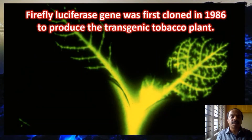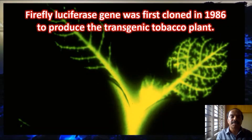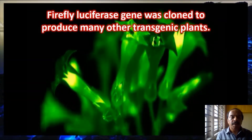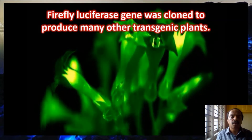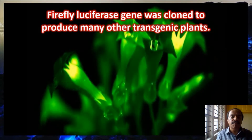Bioluminescence has been utilized by biotechnologists. The gene coding for the bioluminescence enzyme luciferase was first cloned into a tobacco plant in 1986. What you're seeing is a tobacco plant glowing in the night, in which the genes responsible for bioluminescence have been cloned. This phenomenon is now widely used in both plants and animals — you can see the plants and flowers glowing because they carry the genes for bioluminescence.